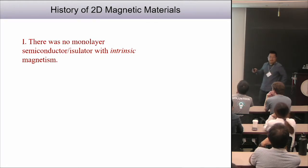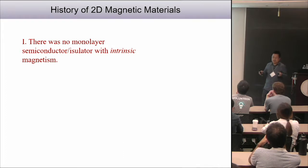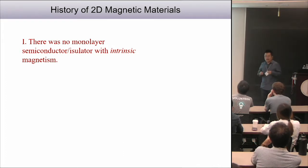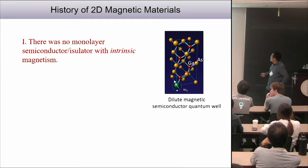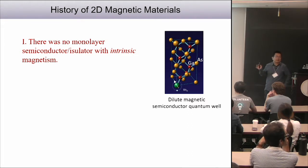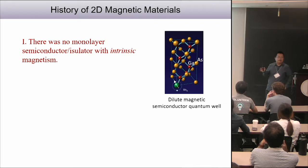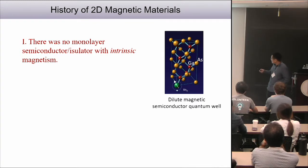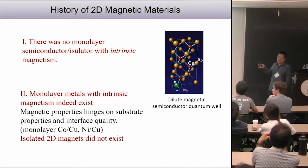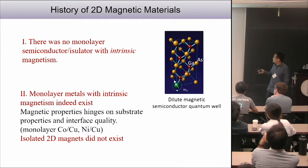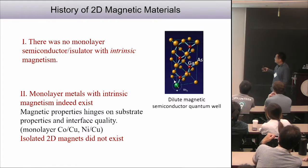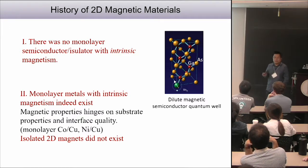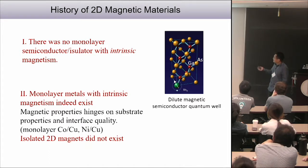2D magnets or magnetism itself has been studied for many, many years. But if you look into the literature, there was no monolayer semiconductor or insulator with intrinsic magnetism. The closest example is diluted magnetic semiconductors, but as the name indicates, the spin density is low, limiting the fundamental physics. Monolayer metals with intrinsic magnetism do exist — like monolayer cobalt on copper or monolayer nickel on copper — but the substrate is quite important. Therefore, isolated 2D magnets did not exist.